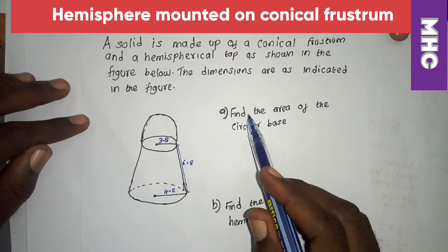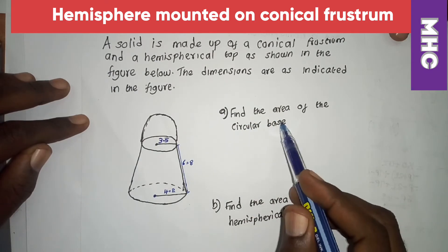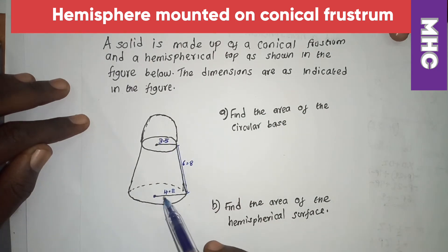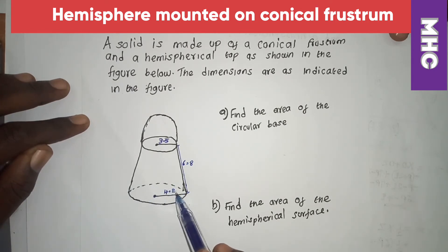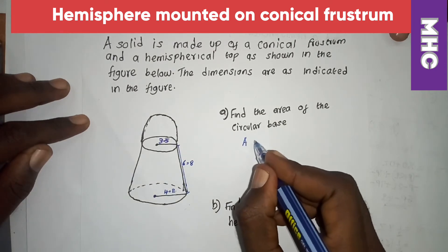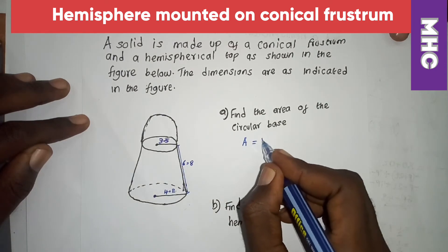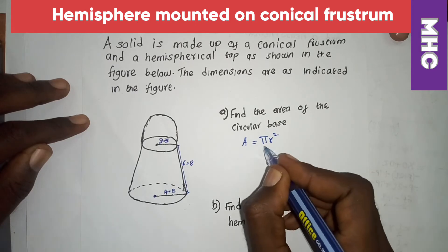Part A: find the area of the circular base. Now which one is the circular base? Our circular base is this one at the bottom. To find the circular base area, we find the area of a circle using A = πr².